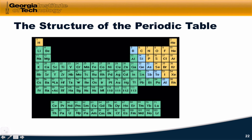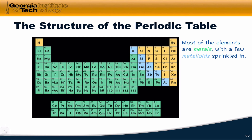In terms of the properties of the elements as a function of their position on the periodic table, the picture to keep in mind is this one. Most of the elements — everything on the left-hand side of the periodic table, with the exception of hydrogen — are metals, with a few metalloids sprinkled in. Metals are generally silvery, lustrous, electrical conductors, and so on. The metalloids are kind of halfway in between; silicon, for example, is a semiconductor — not a great conductor of electricity, but it can conduct under some circumstances. The elements on the right-hand side are known as non-metals.